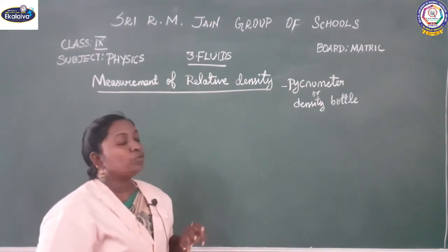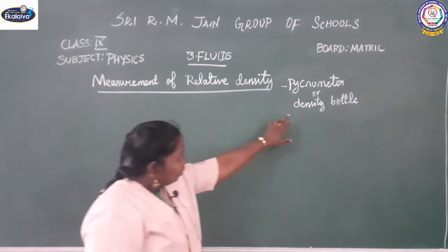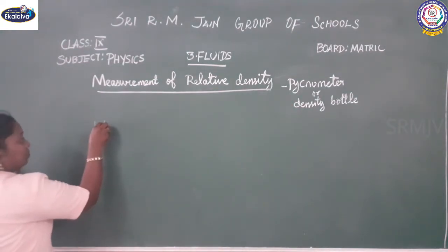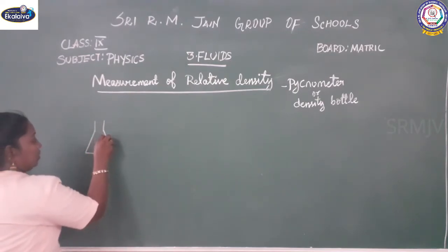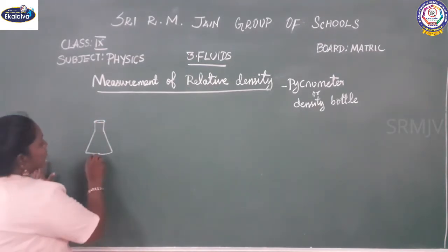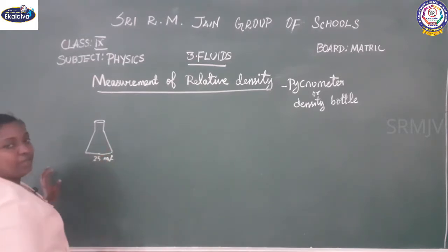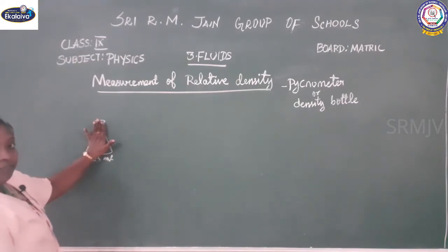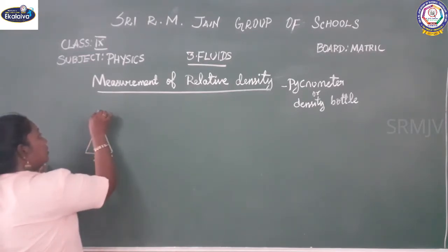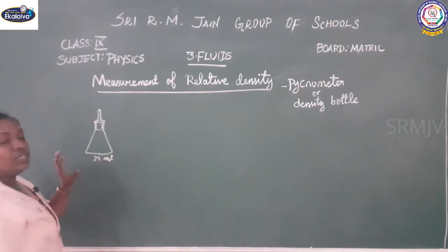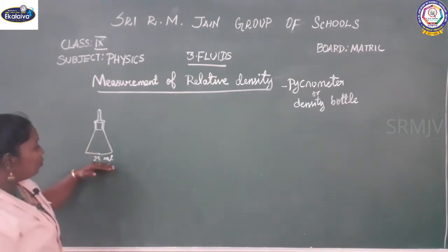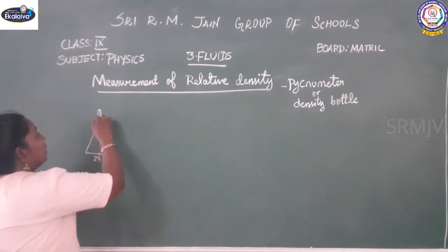Now we will see how this pycnometer is made. We can also call it a density bottle. This pycnometer is made with a glass bottle structure. It has a volume of 25 ml. It can be closed with a stopper, and it will maintain the liquid at the same volume of 25 ml. If any liquid is excess, it can flow out.